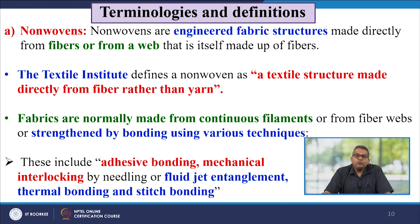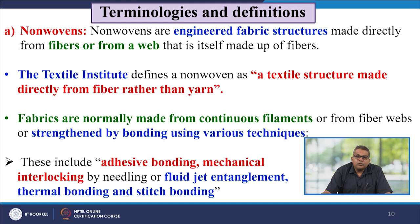Nonwovens are engineered fabric structures made directly from fibres to form a web. The Textile Institute defines nonwovens as a textile structure made directly from fibre rather than yarn. Fabrics are normally made from continuous filament or from fibre webs bonded using various techniques, including adhesive bonding, mechanical interlocking by needling or fluid jet entanglement, thermal bonding, and stitch bonding.